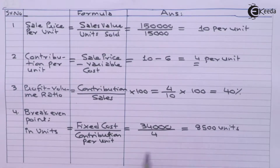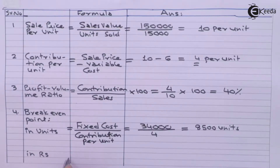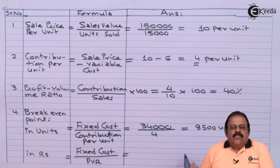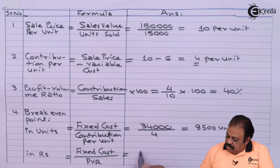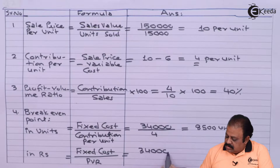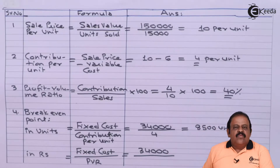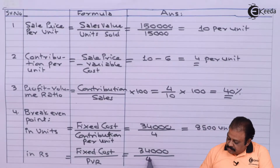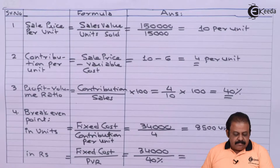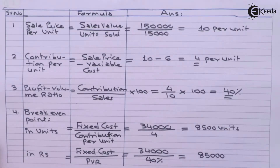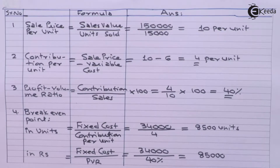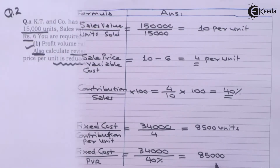Similarly, we can find out break-even point in rupees. The formula is fixed cost divided by profit volume ratio. Fixed cost is ₹34,000 divided by PV ratio of 40%. Break-even point in rupees is ₹85,000.